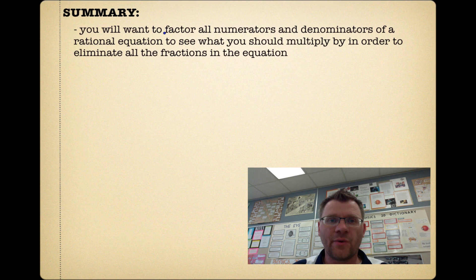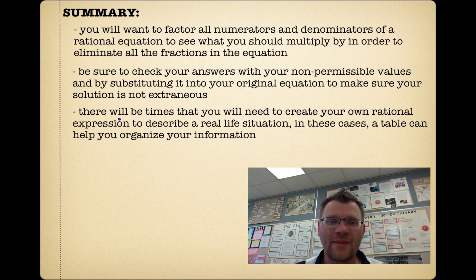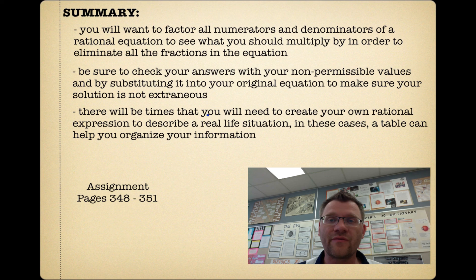So in summary, you will want to factor all numerators and denominators of a rational equation to see what you should multiply by in order to eliminate all fractions in the equation. Be sure to check your answers with your non-permissible values and by substituting into your original equation to make sure your solution is not extraneous. And there will be times that you will need to create your own rational expression to describe a real-life situation. In these cases, a table can help you organize your information. So your assignment is on pages 348 to 351. Good luck, and we'll see you in class.